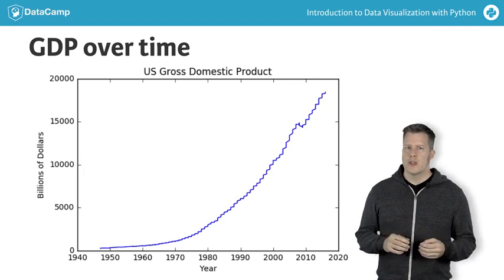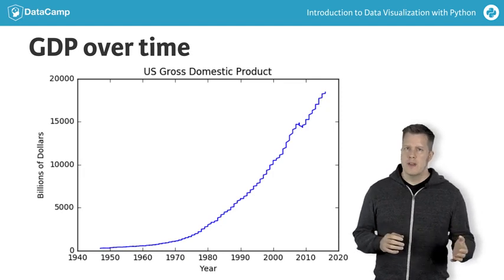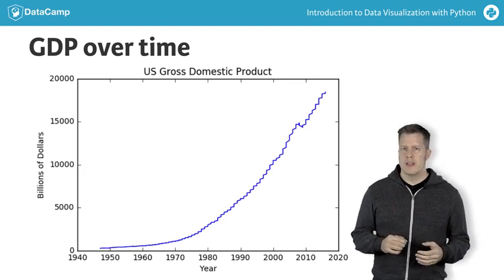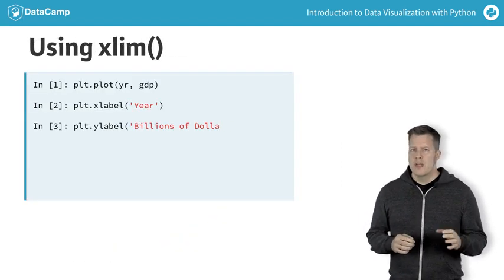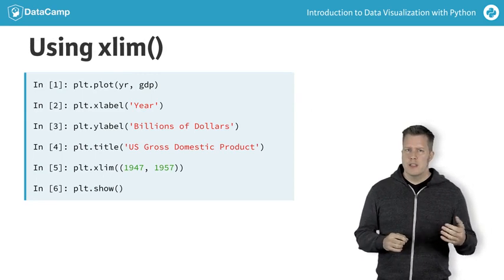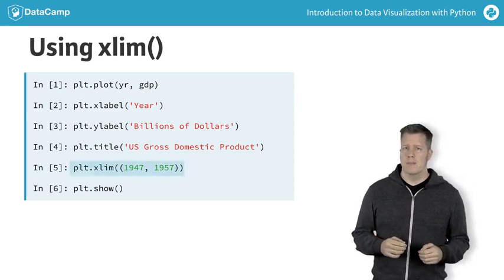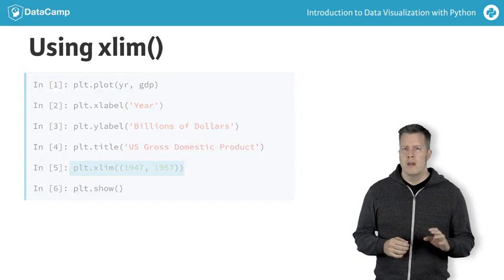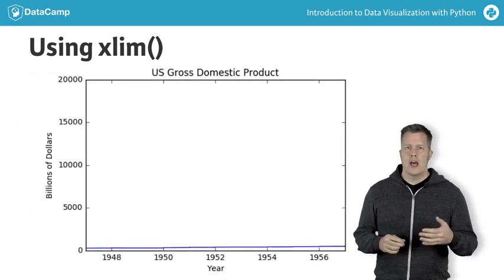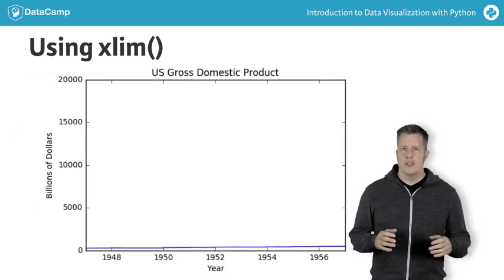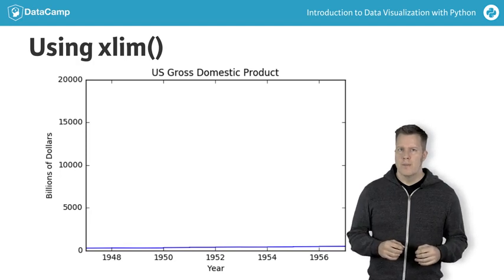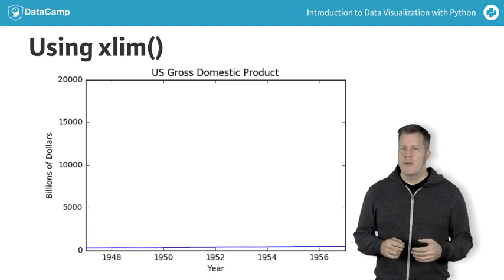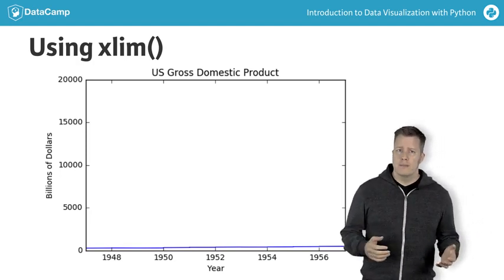Suppose we want to zoom in on a portion of the graph, say the years from 1947 to 1957. We can do this by explicitly setting the horizontal axis limits using the Xlim command. The resulting figure is not all that great — we can see that the vertical scale is too tall to see what's going on. It's the same default vertical scale that fits all the data.